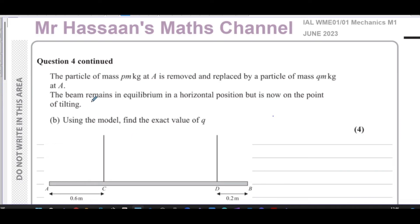So now we're going to answer question 4 part B. It says the particle of mass Pm kilograms at A is removed and replaced by a particle of mass Qm kilograms at A, the same place.